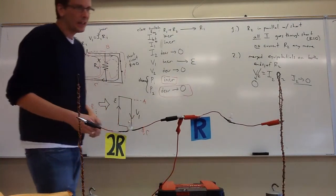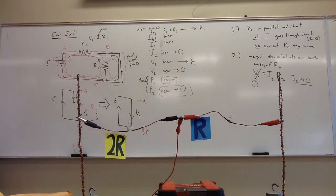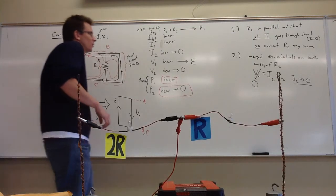What if instead of a short circuit, it's just another resistor added in parallel? Not much changes — it just doesn't happen as extremely. The current through R2 is not going to go all the way down to zero, because we're not giving a totally free ride around it.